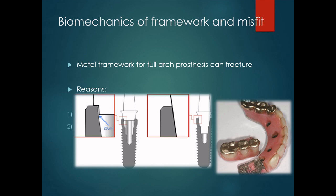When there is a discrepancy present, the prosthesis should be sent back to the lab where it will be sectioned and welded or refabricated. There are several techniques to determine the amount of framework passivity, and there is also the Kenauss classification of misfit.